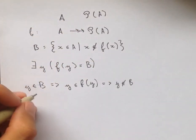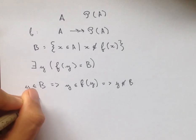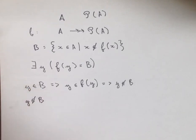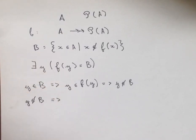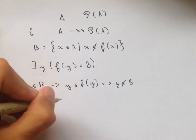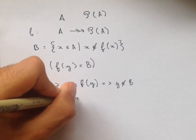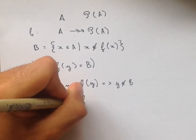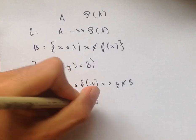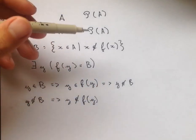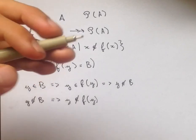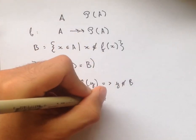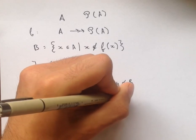So maybe the correct assumption is that Y is not an element of B. But we're going to get a contradiction here too nearly the same way, because if Y is not an element of B, then Y is not an element of F of Y. But then now it satisfies the definition of what it needs to have to be an element of B. And so that means that Y is an element of B.